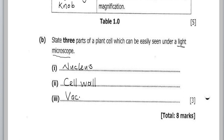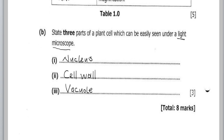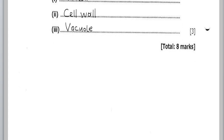An electron microscope would show more detailed features that are very minute, like the Golgi bodies and endoplasmic reticulum. But since we're looking at a light microscope, we concentrate on those that can be easily seen — nucleus, cell wall, and vacuole.